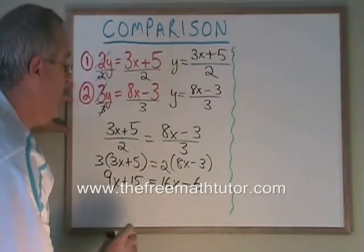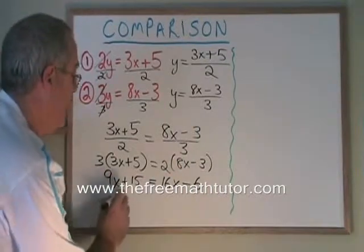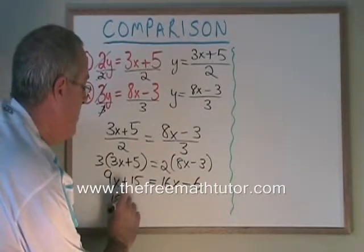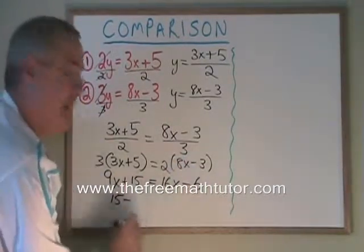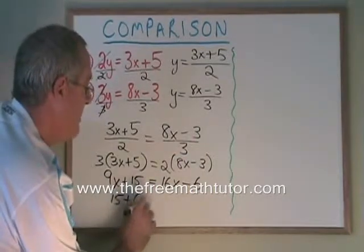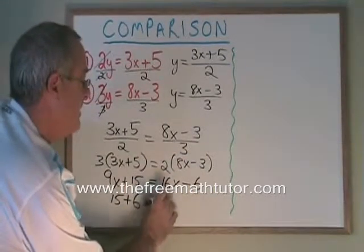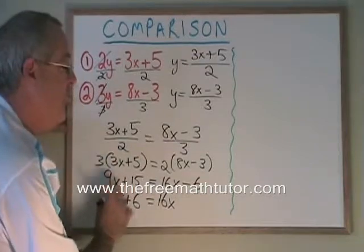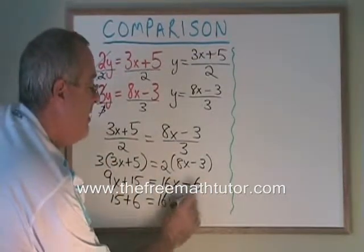Let's get all of the x's to the right and all of the constant terms to the left. So my 15 stays where it is, then the minus 6 moves to the other side and becomes plus 6. The 16x stays where it is and the 9x moves to the other side and becomes minus 9x.